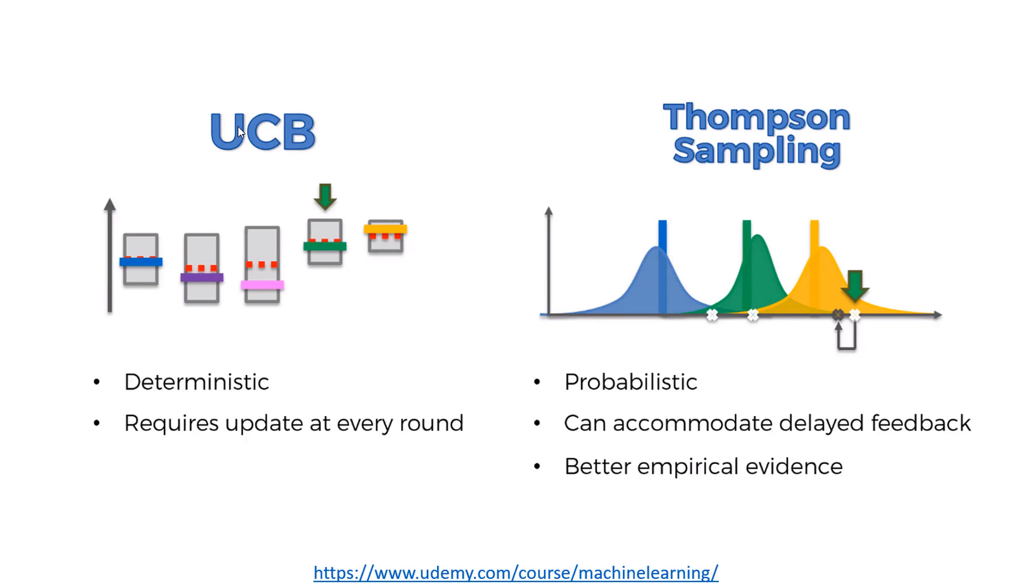Maybe it's a little more computationally expensive to get a value from a distribution. Maybe not—I don't think so, because we have formulas in UCB as well. Maybe the computational power is the same thing. If you do Big-O notation, it's probably going to be the same thing because you'd have two for loops in each of these.